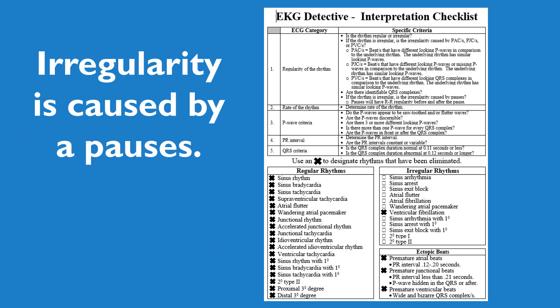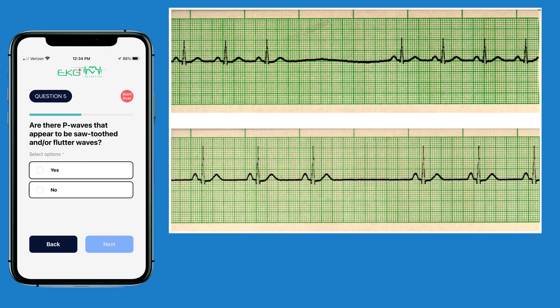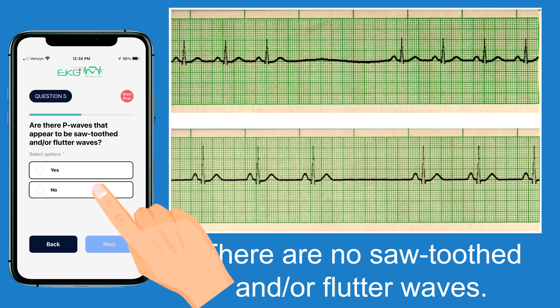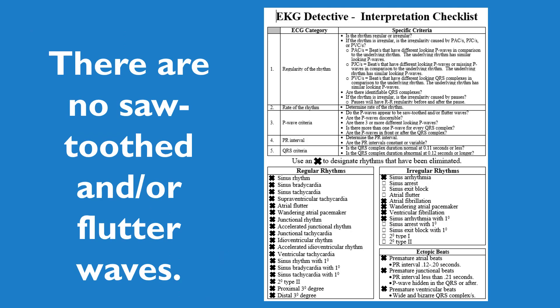Referring to our checklist, since we do have pauses, we can eliminate sinus arrhythmia, atrial fibrillation, and wandering natural pacemaker, because those three rhythms typically aren't associated with pauses. Question five asks if there are P waves that appear to be sawtooth or flutter waves. Looking at the ECG, it doesn't appear like we have any extra P waves or flutter waves. We select no and hit next. Since there are no flutter waves, we can eliminate atrial flutter, which is associated with flutter waves or F waves.